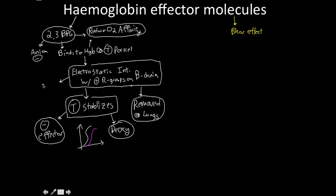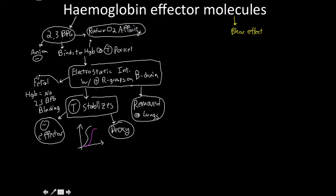Fetal hemoglobin — which is used not only to treat sickle cell anemia but also for transfusion purposes to help the body adapt to certain types of hypovolemic shock — has a higher affinity for oxygen because fetal hemoglobin has no 2,3-BPG binding, or I should say reduced binding, but it's pretty much non-existent. That's why fetal hemoglobin is so good at stealing oxygen from the mother's blood.